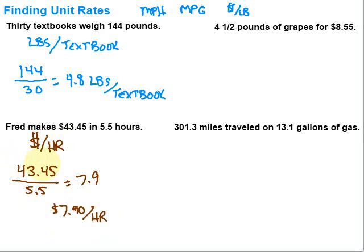If we would have done the division the other way, we would have gotten hours per dollar — maybe not quite as commonly referred to, but maybe useful depending on the situation.